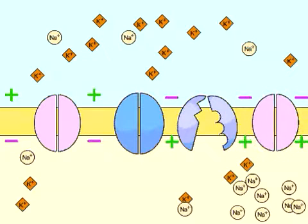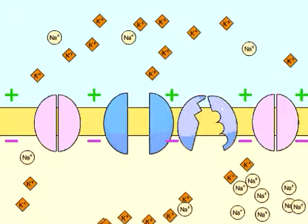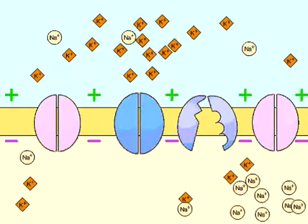In this way, the action potential travels down the neuron like a wave. In the wake of the action potential, potassium leaves the cell, restoring the negative charge inside the neuron.